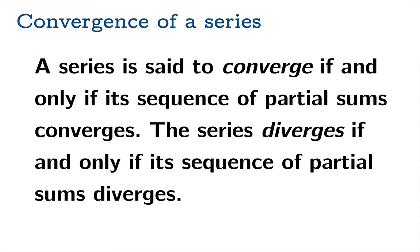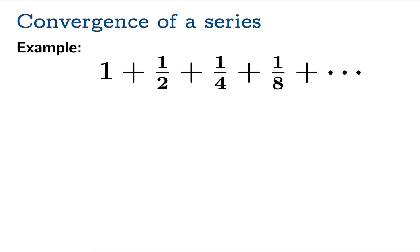And of course, a series diverges if and only if its sequence of partial sums diverges. Let's look at another example we'll study carefully in the future — an example of a geometric series: one plus one half plus one quarter plus one eighth. You'll notice that each term is a power of one half — one over two, one over two squared, one over two cubed, etc.